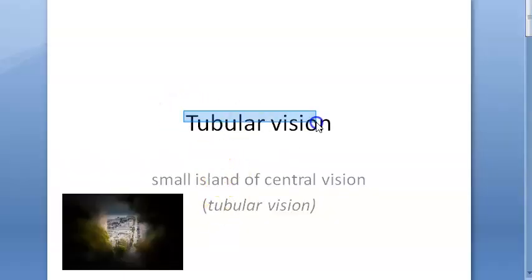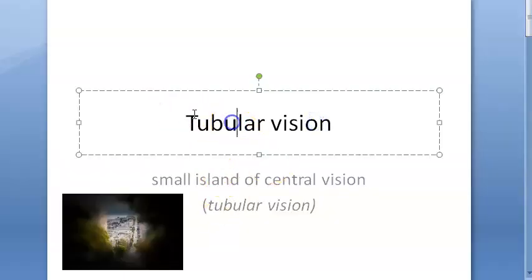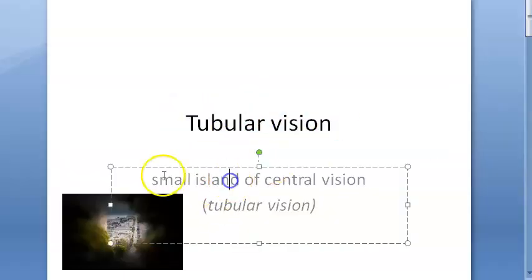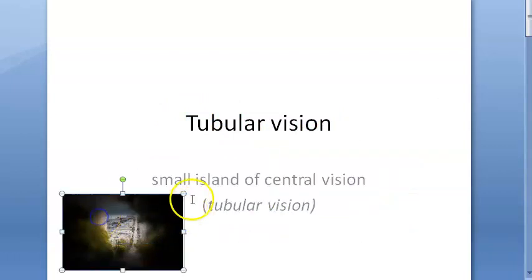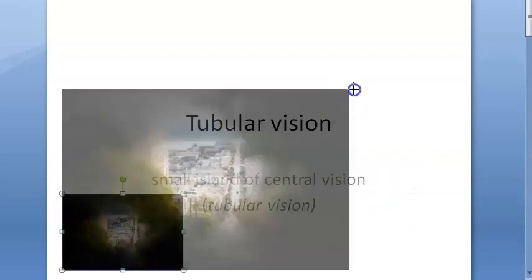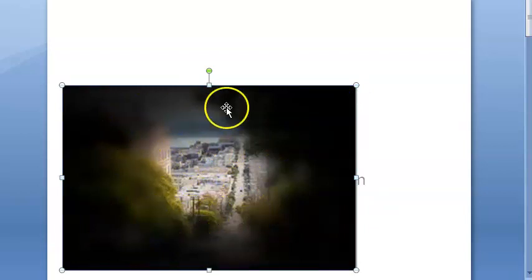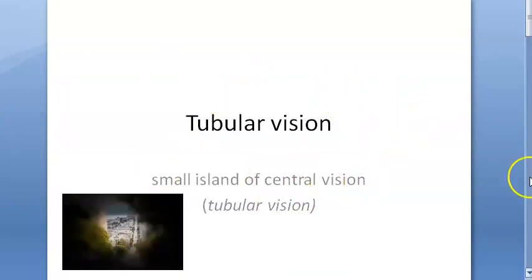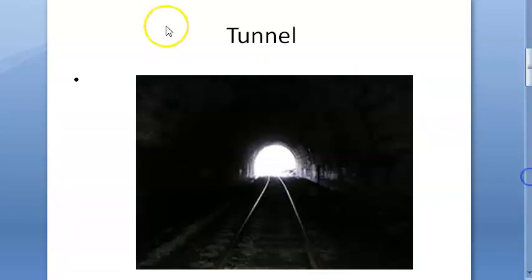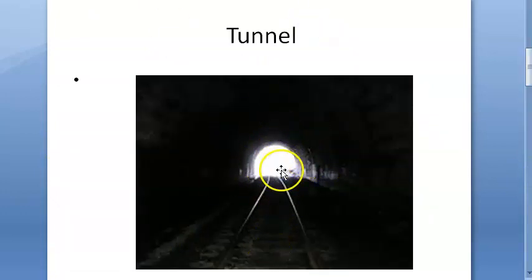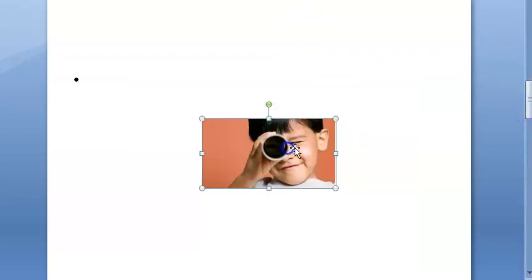In this video, let us look at tubular vision. Tubular vision means a small island of central vision is there — it's also called tunnel vision. The central small area they are able to see, but peripheral vision is totally gone. This is tubular vision or tunnel vision. When you're going through a tunnel, this is how it looks, so you can definitely call it tunnel vision.